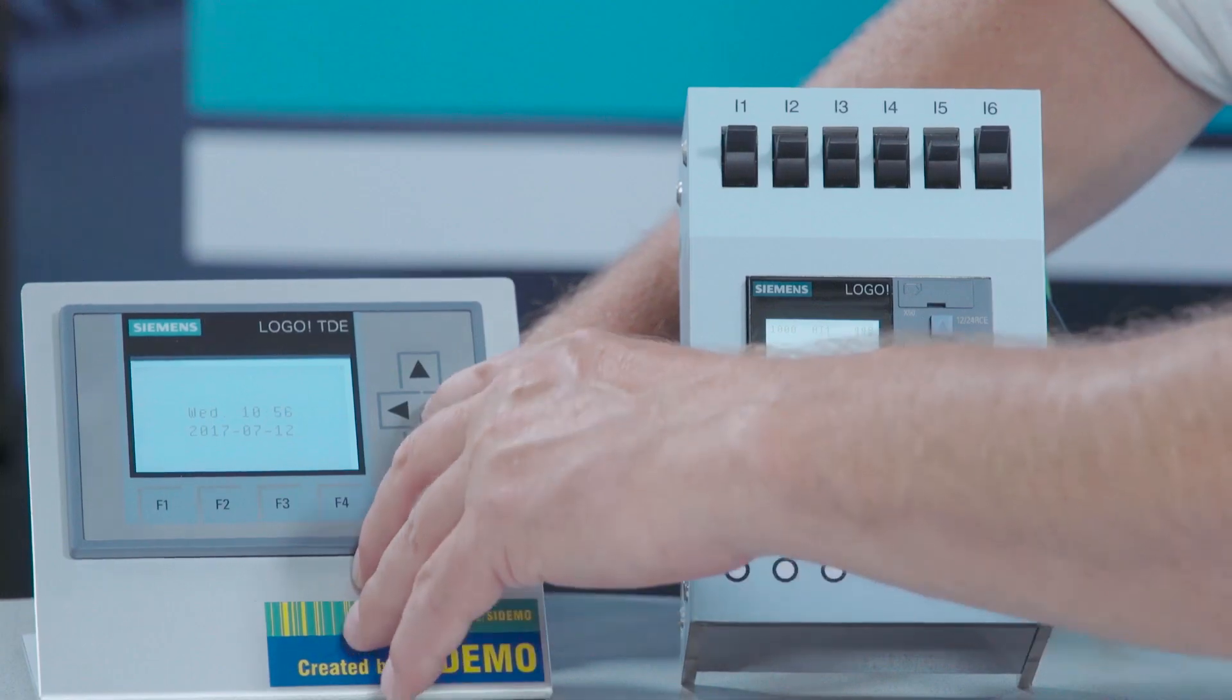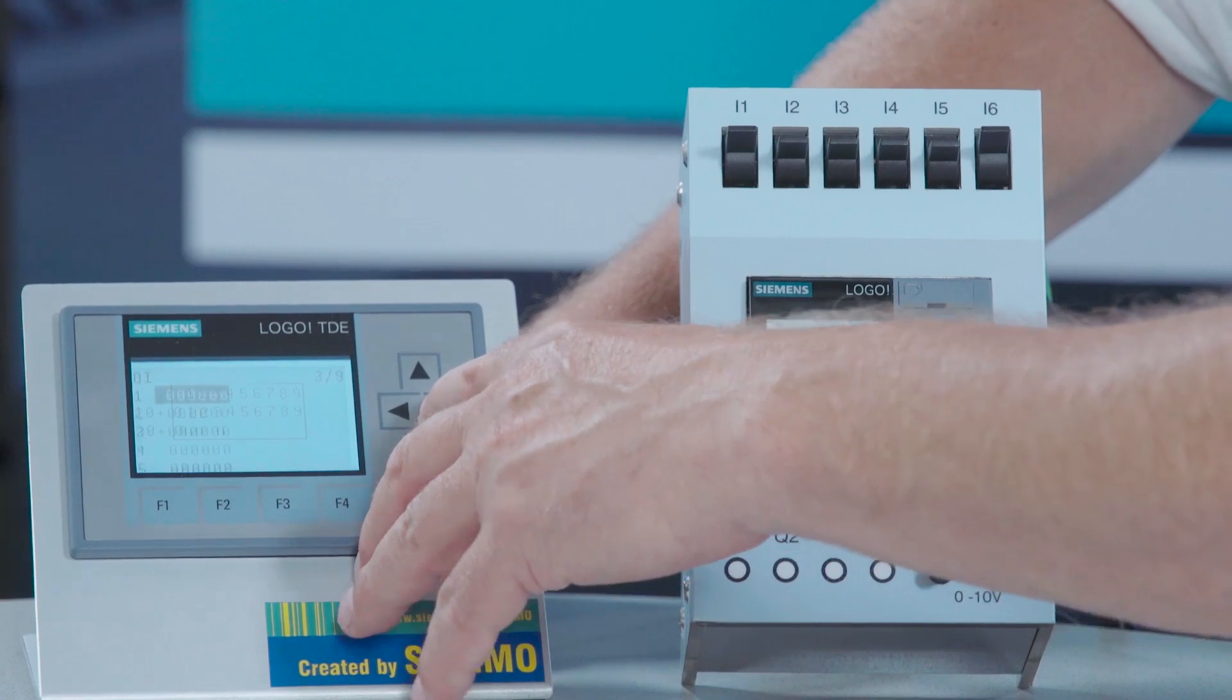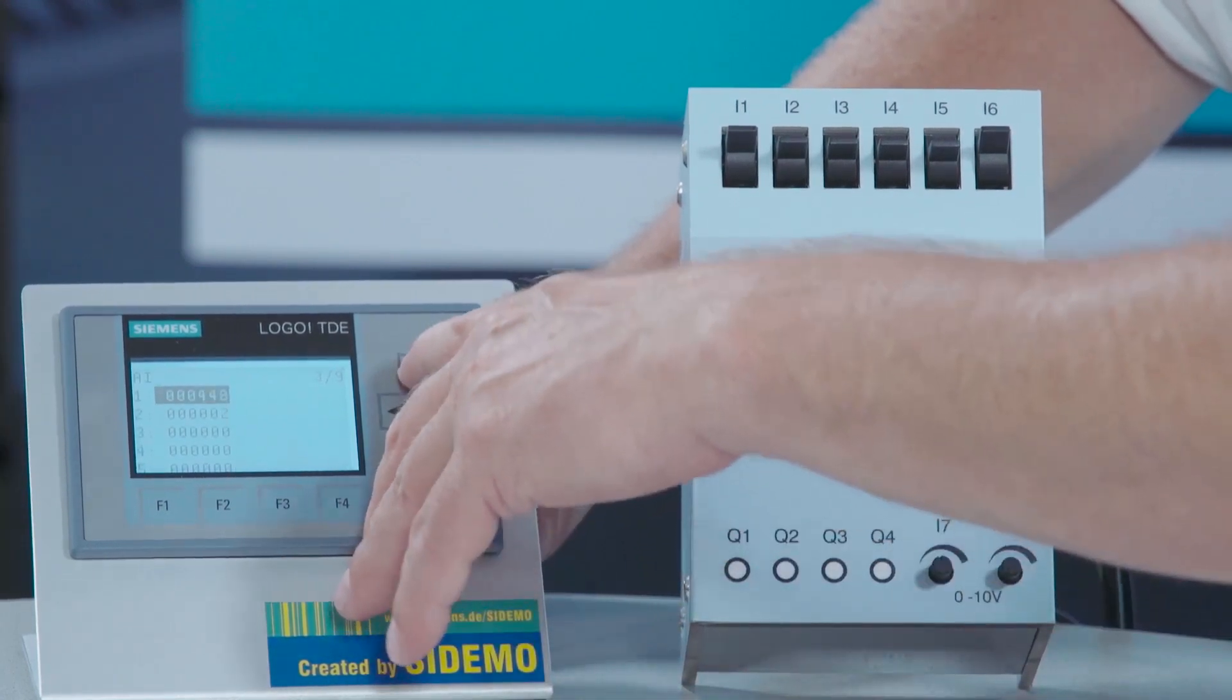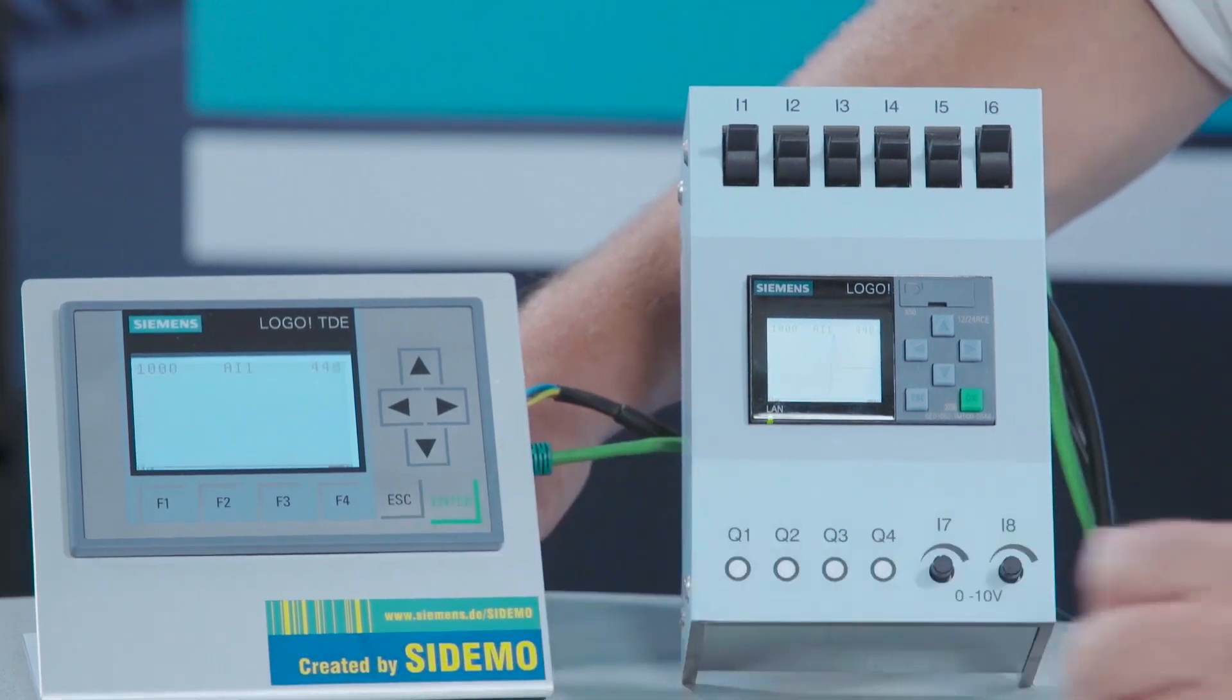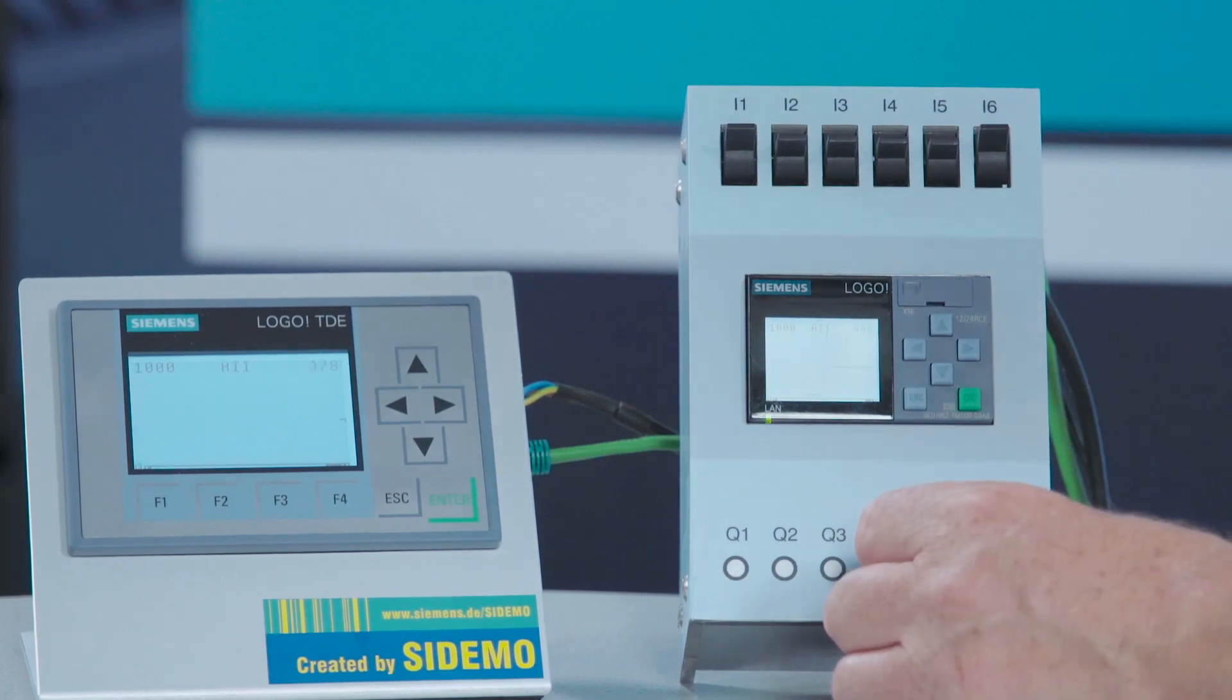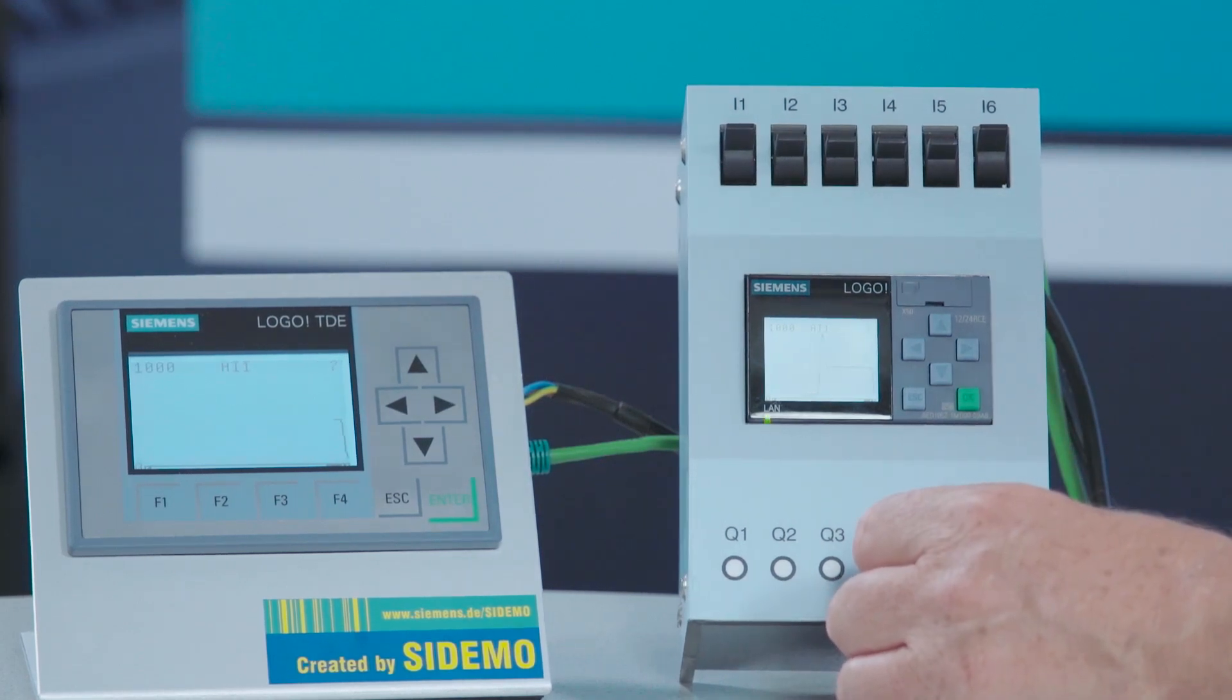Here too, I can switch to the relevant menu, use the arrow up and arrow down buttons to select the value I want to monitor and press enter to see the value as a trend view on the TDE as well.